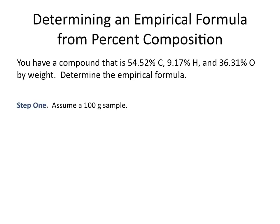The first step when starting these problems is to assume that you have a 100 gram sample. You can assume any sample size, but if you assume 100 grams, then 54.52 grams are carbon, 9.17 grams are hydrogen, and 36.31 grams are oxygen. Assuming a 100 gram sample allows for an easy conversion of percent by weight to grams.